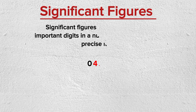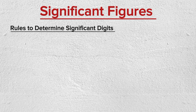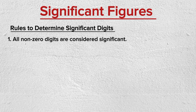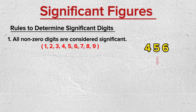Follow these rules to accurately mark out significant digits in a number. Rule 1: All nonzero digits — that is, 1, 2, 3, 4, 5, 6, 7, 8, 9 — are considered significant. For example, 456 has three significant digits.